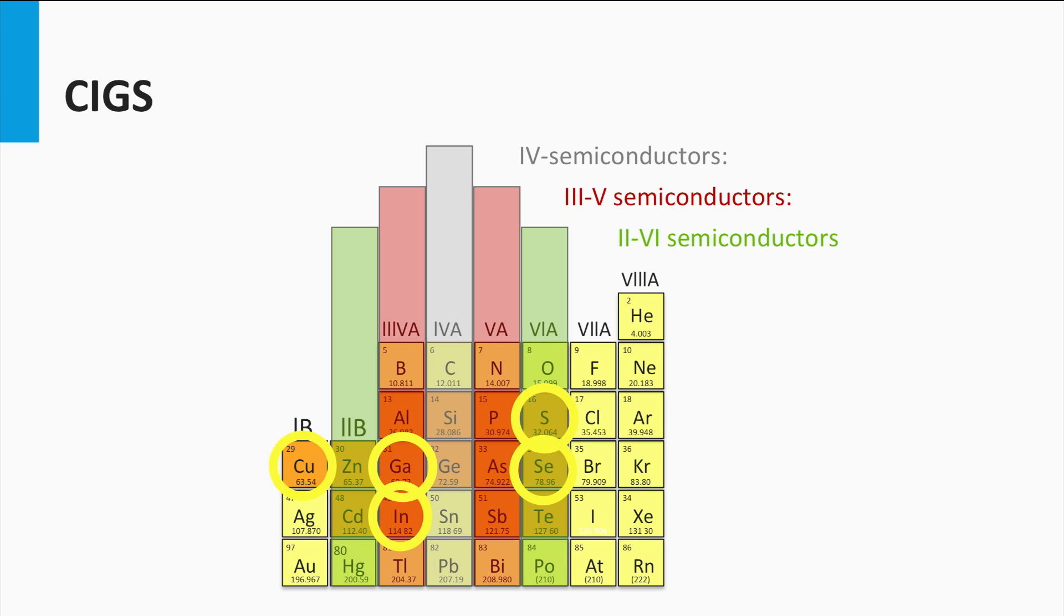The typical CIGS alloys are heterogeneous materials. The physical properties of CIGS are rather complex, and many different views exist on these properties among scientists.